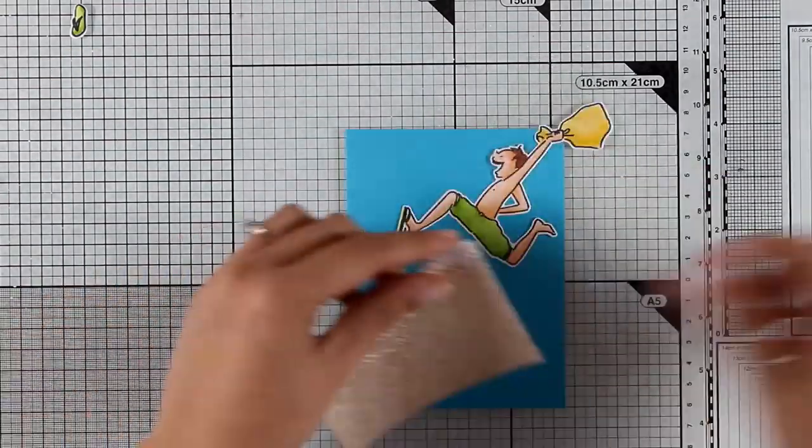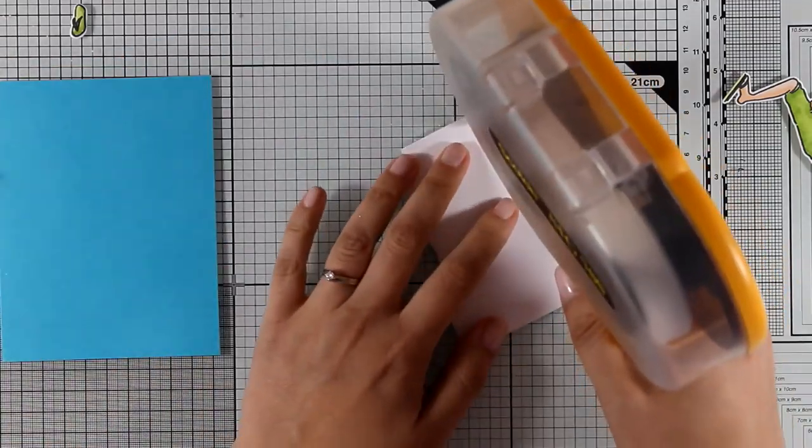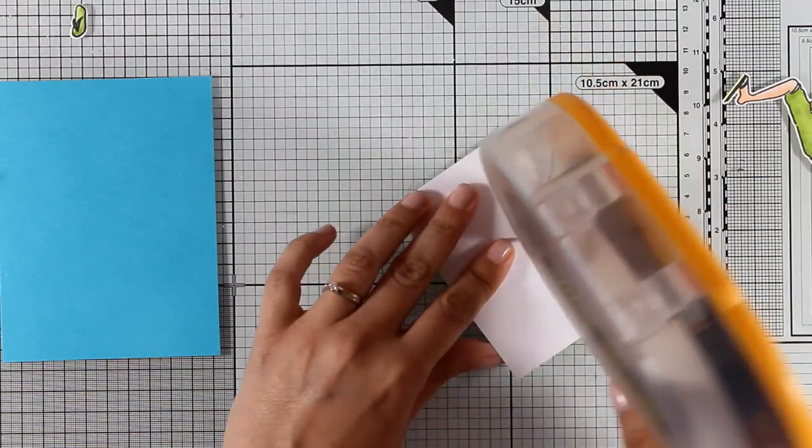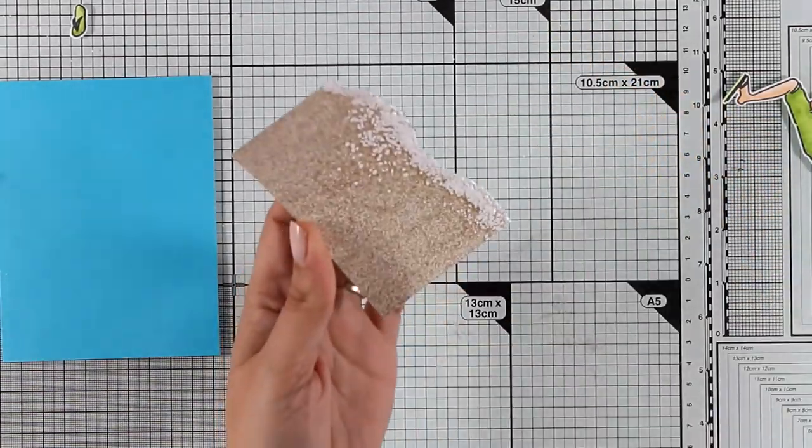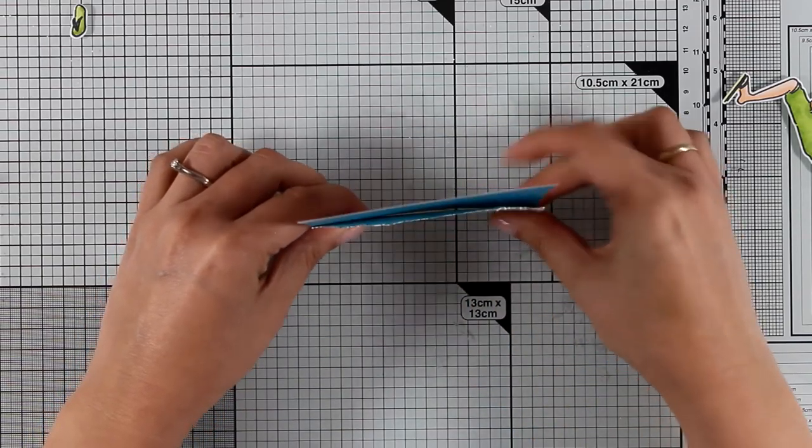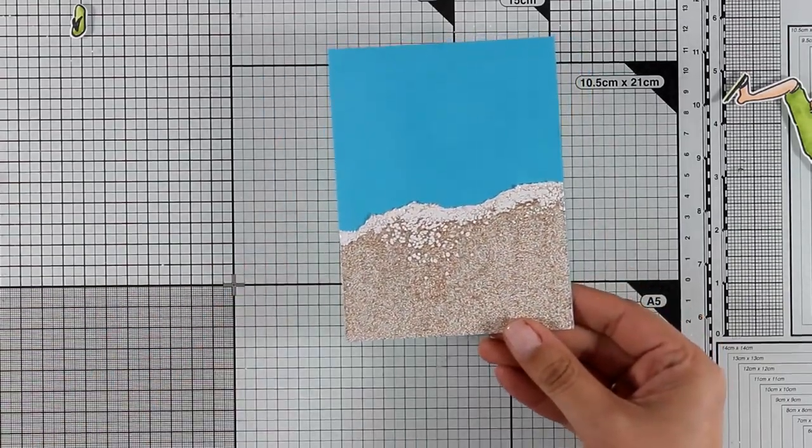Now let's go to the fun part - it's time to assemble my card. I have all the pieces ready to go. I'm going to stick the sand on top of a blue panel that's 4 by 5.25 inches, so again slightly smaller than standard card. I'm sticking my sand at the very bottom of this panel and you can already see the sea and the sand.